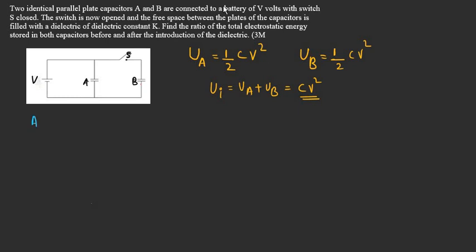For capacitor A, we can see that it is still connected to the battery of V volts. So the potential drop across the capacitor remains V. We are introducing a dielectric slab of dielectric constant K, so the new capacitance of A becomes KC. Therefore, the new energy stored in capacitor A will be: U_A_new = ½ × KC × V² = ½KCV².